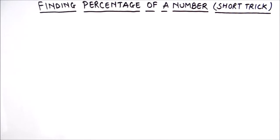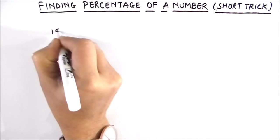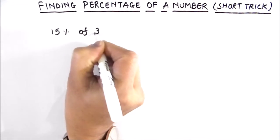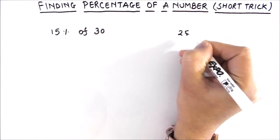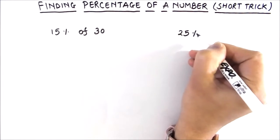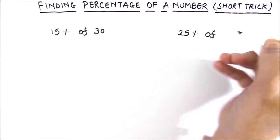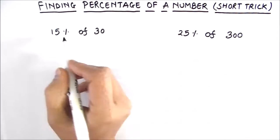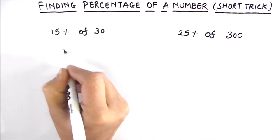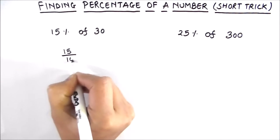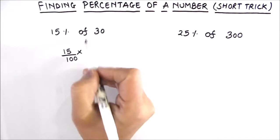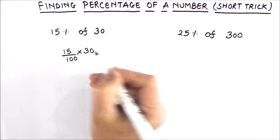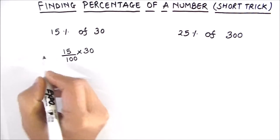Let's find out 15 percent of 30 and 25 percent of 300. So 15 percent means 15 out of 100. 'Of' indicates multiplication, and the number is 30. So if we solve this, we will get 15 percent of 30.